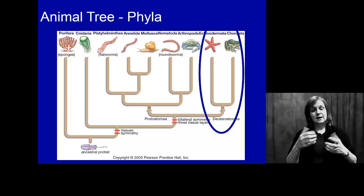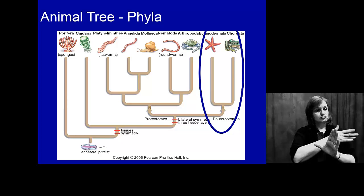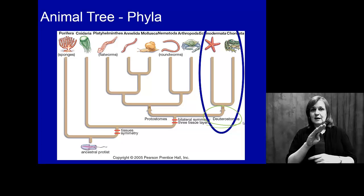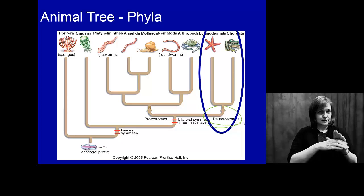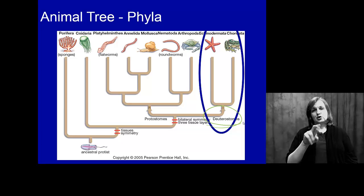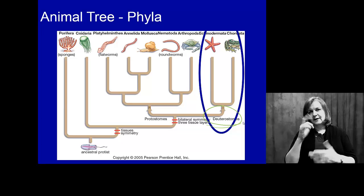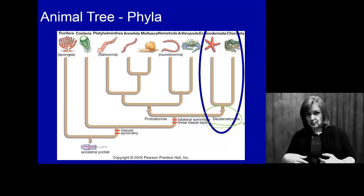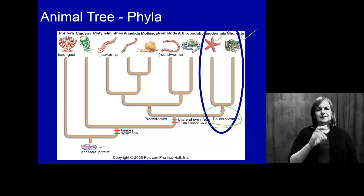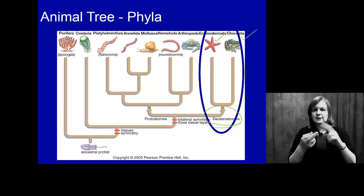We've now come a long way in the animal kingdom. Now we finally get to move into our deuterostomes. Still bilateral symmetry, still three tissue layers. Keep in mind what those things mean, but now we have a new form of development. For this first group, the echinoderms, you are unlikely to see the level of complexity — keep in mind you are a chordate. The echinoderm is your closest relative on this tree.